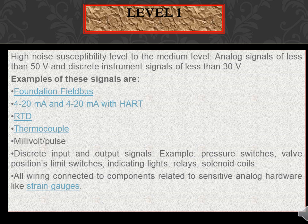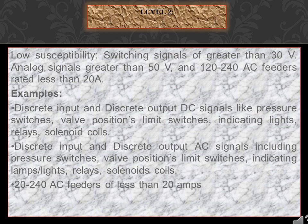Examples of Level 0/1 signals include Foundation Fieldbus, 4 to 20 milliampere, 4 to 20 mA with HART, RTD, thermocouple, millivolt, pulse, and discrete input/output signals such as pressure switches, valve positions, limit switches, indicating lights, relays, and solenoid coils. All wiring connected to sensitive analog hardware like strain gauges also falls under this level. Level 2 covers low susceptibility switching signals greater than 30V and analog signals greater than 50V.